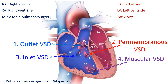Perimembranous VSD is in the upper part of the interventricular septum where it is thin and like a membrane. Muscular VSD is a defect in the thick muscular part of the interventricular septum. Inlet VSD is near the atrioventricular valves which form the inlet of the ventricles. It is often associated with other endocardial cushion defects like a cleft in the anterior mitral leaflet producing mitral regurgitation, and ostium primum atrial septal defect.